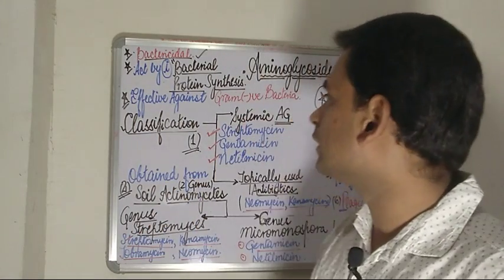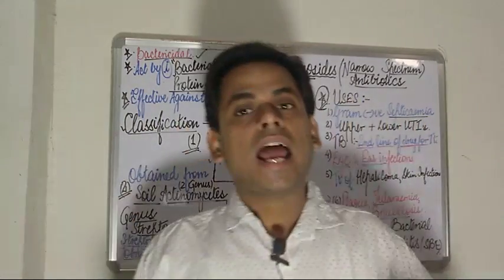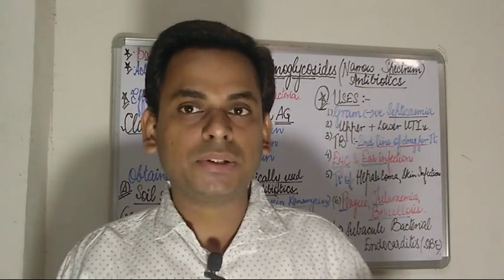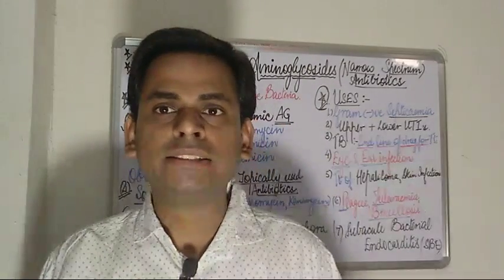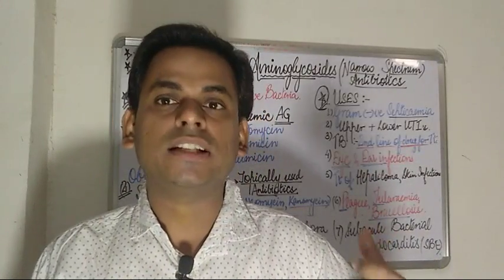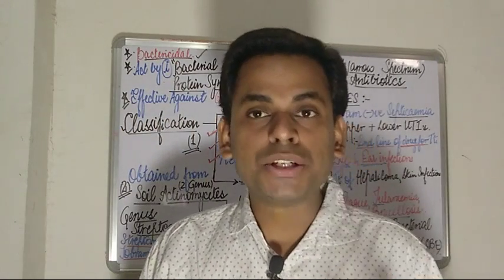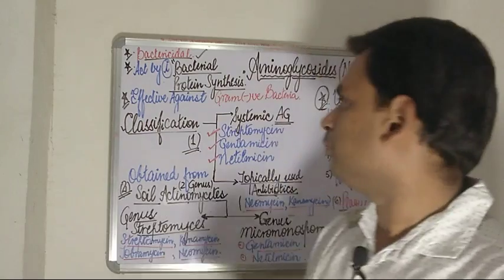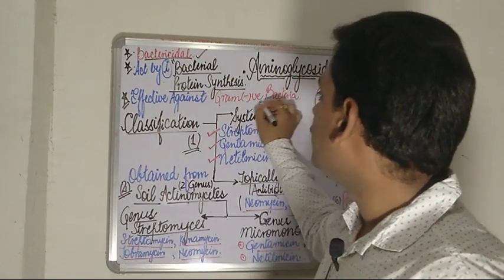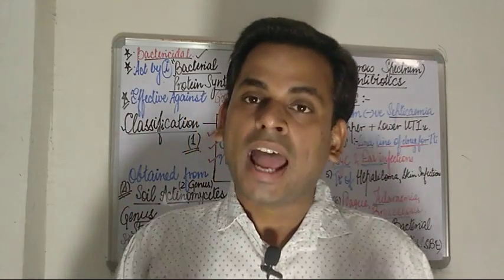When talking of the mechanism of action, these aminoglycosides act by inhibiting bacterial protein synthesis. Since the protein synthesis is being inhibited, within a prokaryotic bacterial cell there is a 70S type of ribosome, which has two subunits — the 50S and the 30S. These aminoglycosides bind to the 30S subunit of the ribosome and elicit their action.